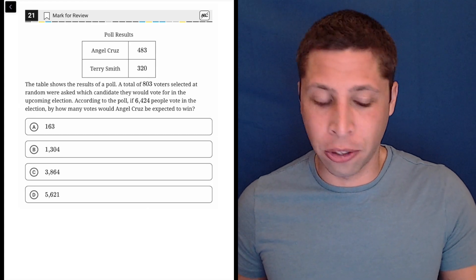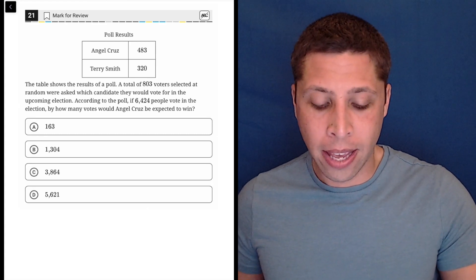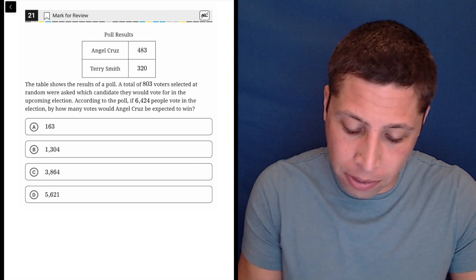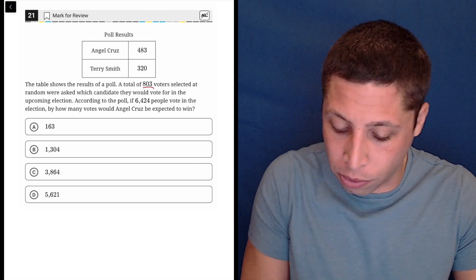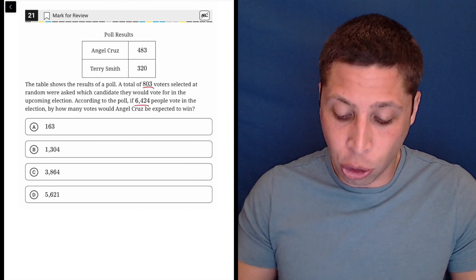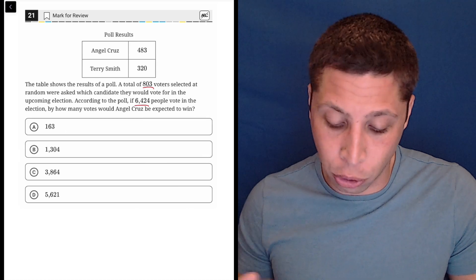This question definitely has some traps, so I'll try to point them out as we get to them. The actual math is not that complicated, it's just more annoying. We need to be able to take these 803 votes and extrapolate them out to the actual vote, which would be 6,424.